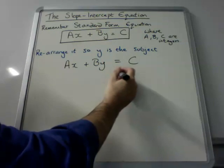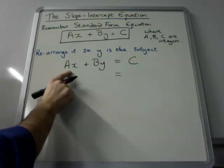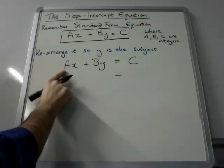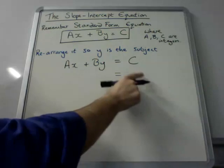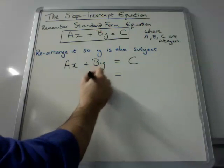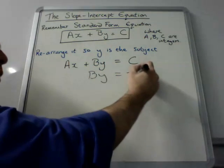Now first of all, I would like to get rid of this Ax. And to do that, I'm going to subtract Ax from both the left and the right hand side. And then my equation would look like this.